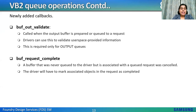Two newly added callbacks: buf_out_validate is called when the output buffer is prepared or queued for a request; drivers can use this to validate user-space-provided information and it is required only for output queues. buf_request_complete is for a buffer that was never queued to the driver but is associated with a queued request that was cancelled; the driver must mark associated objects in the request as completed; required if such requests are supported.